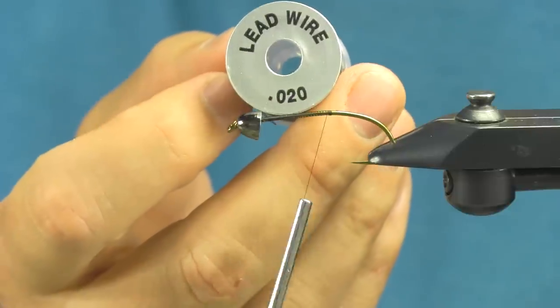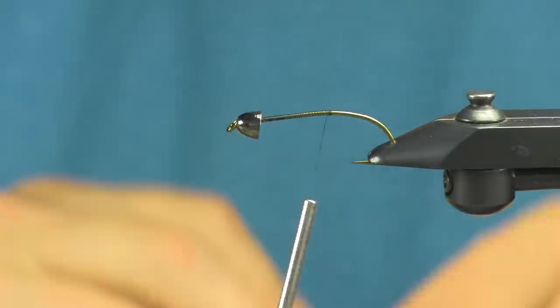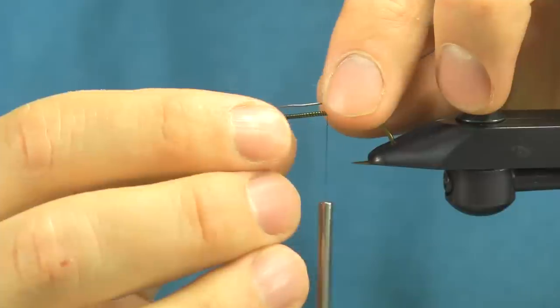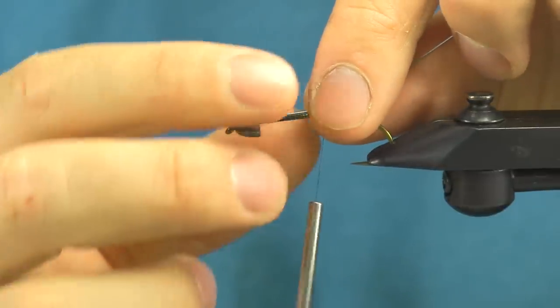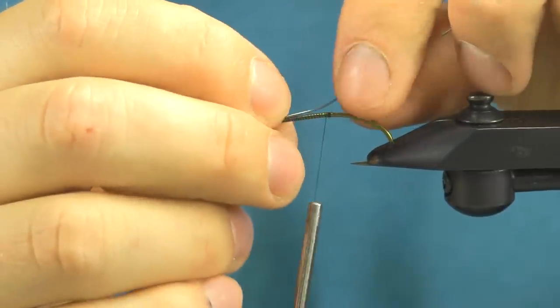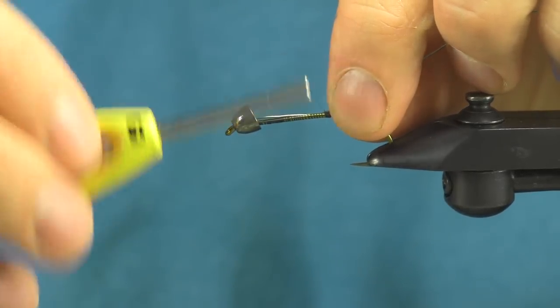Then I'm going to use some .20 lead wire. A little trick with the lead wire, as you go to put it inside these cone heads, is if you put it on the top of the shank and you insert it in, it'll actually hold that cone head so it stops bouncing around. It won't hold all the way, but it'll give it a good place to live.